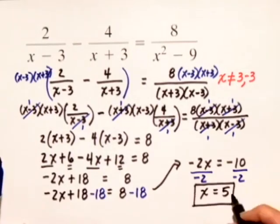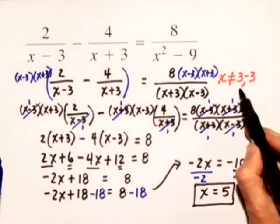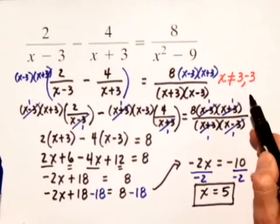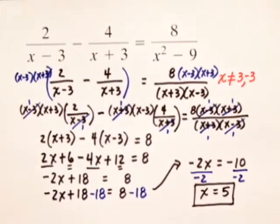Now notice that this solution, x equals 5, is not part of our restricted values that we talked about in the beginning. So our solution set is x is equal to 5.